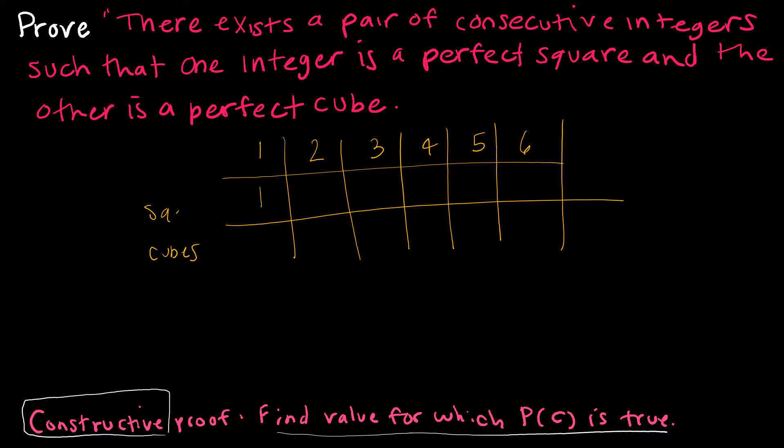One squared is one, one cubed is one. Two squared is four, two cubed is eight. Three squared, three times three, is nine. Three cubed is 27. Keep in mind, I'm just looking for a pair of consecutive integers, and I'm going to stop because I've already found it. Right here, I have eight and nine.